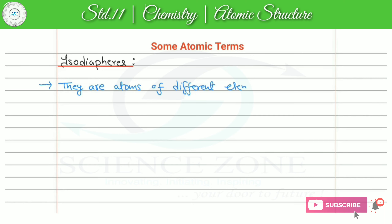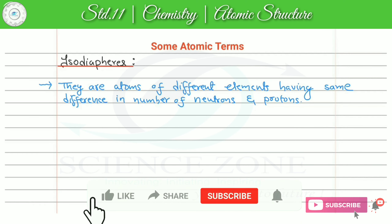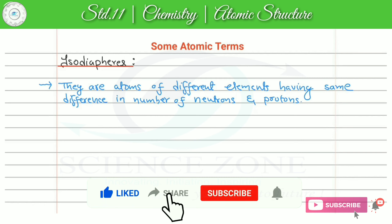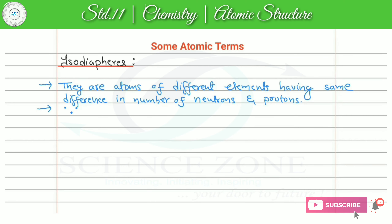They are atoms of different elements having same difference in number of neutrons and protons. Which means in case of isodiaphers, neutron minus proton will be same. Normally neutrons and protons can be equal, but if we look at the difference, since neutrons are more than protons, in isodiaphers we study the neutron and proton difference, which will be found to be same.